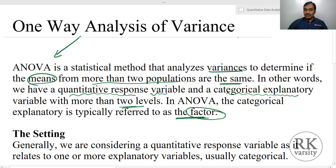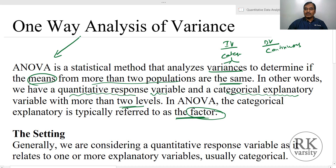In simple terms, you have an independent variable which is measured on a nominal scale or which is a categorical variable, and you have a dependent variable which is measured on a continuous scale. The independent variable will have multiple categories, and the dependent variable is continuous.